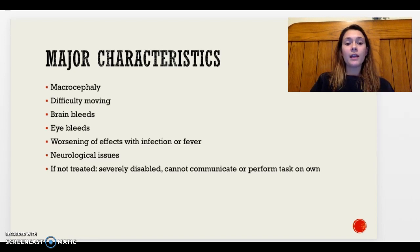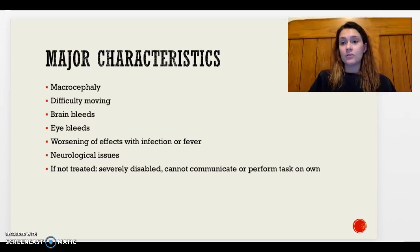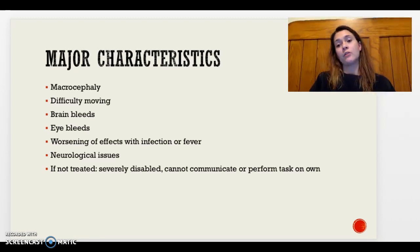Neurological issues can also occur — the child can become hypotonic, lose head control, or have a seizure, and this is when symptoms typically get worse and can lead to permanent disability. As the slide says, if this isn't treated it can lead to severe disability where the child cannot communicate, perform their own tasks, and must depend on a caregiver.